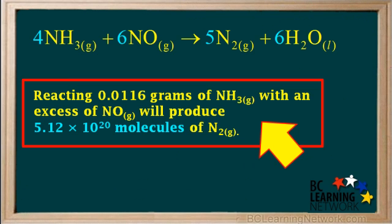We can now state the final answer as reacting 0.0116 grams of NH3 with an excess of NO will produce 5.12 times 10 to the 20th molecules of N2.